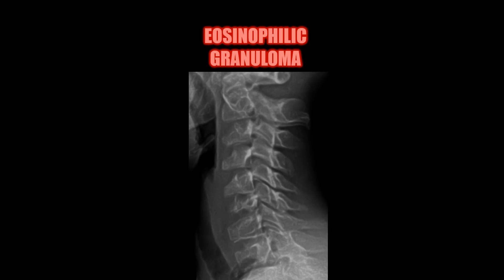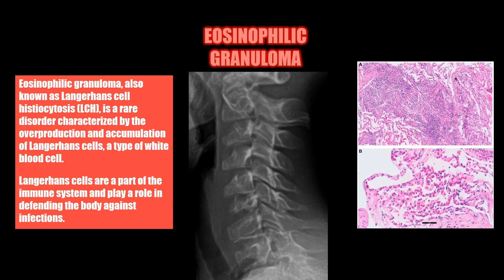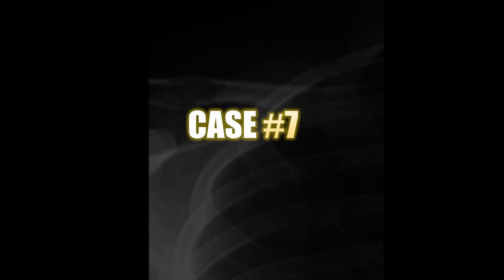Case number six: the flattened appearance of the C6 vertebral body is due to eosinophilic granuloma. Eosinophilic granuloma, also known as Langerhans cell histiocytosis, is a rare disorder characterized by the overproduction and accumulation of Langerhans cells, which are a type of white blood cell.